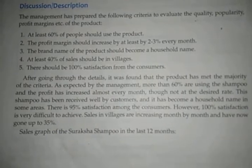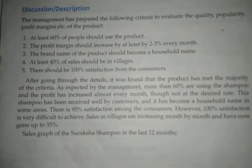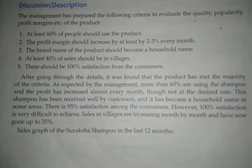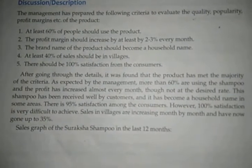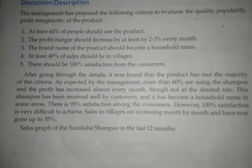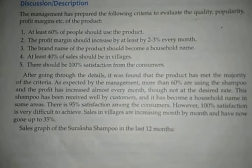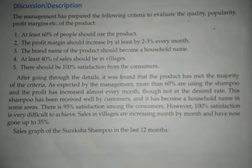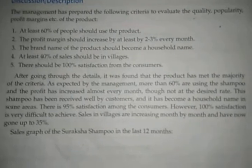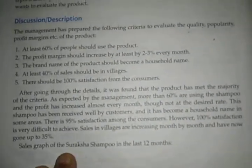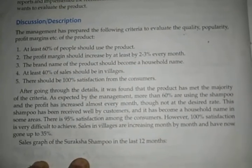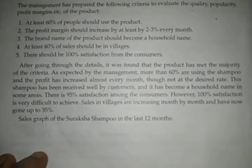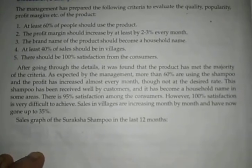There is 95% customer satisfaction, slightly below the expected 100%, but 100% satisfaction is very difficult to achieve. Sales in villages are increasing month by month and have now gone up to 35%, close to the target of 40%. The sales graph of Surakshar Shampoo over the last 12 months shows data month-wise on the x-axis and percentages on the y-axis.